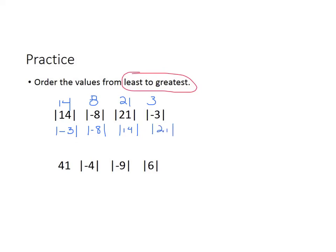Our next example: 41 is just plain old 41. The absolute value of −4 is 4, the absolute value of −9 is 9, and the absolute value of 6 is 6. Put those in order from least to greatest: the absolute value of −4, the absolute value of 6, the absolute value of −9, and then 41.